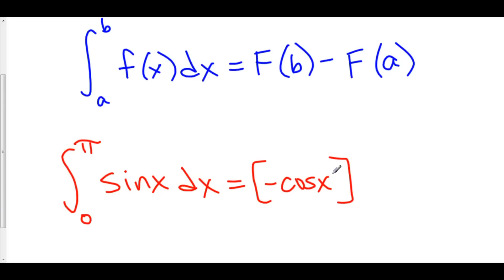And so we're going to take this antiderivative here, and first we're going to plug in pi, our b, then we'll subtract off, plugging in zero.